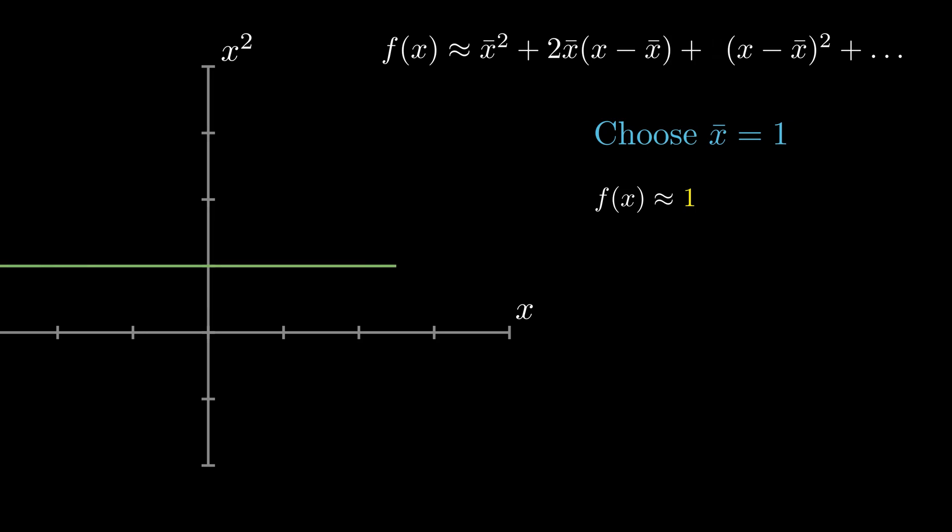It doesn't look anything like x squared, however when x equals 1, it does intersect exactly the same point as x squared, so that's something I guess.